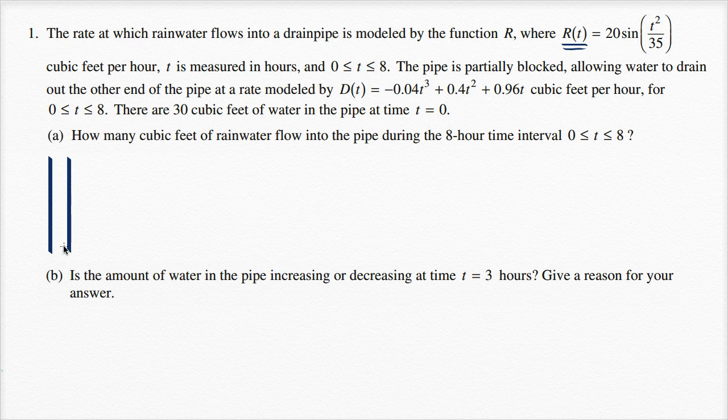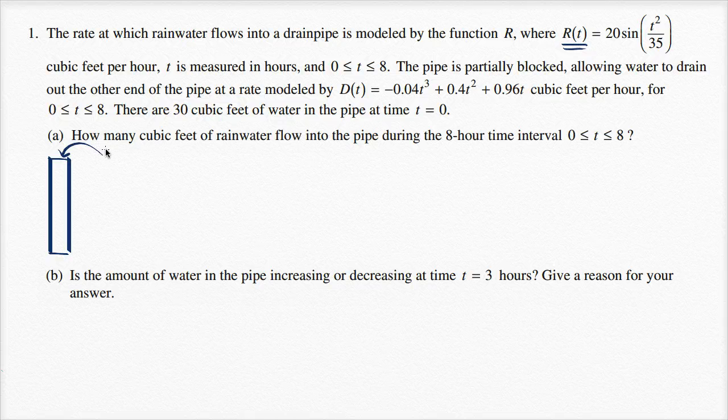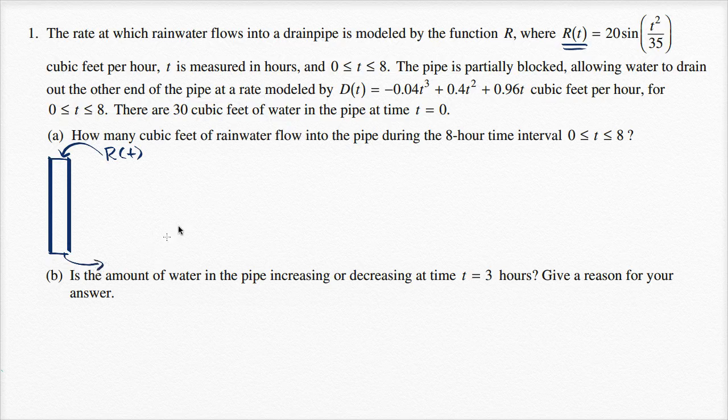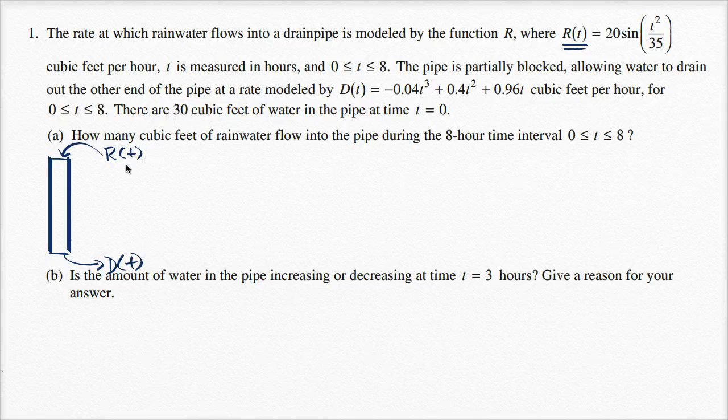Things are flowing in at a rate of R(t), and things are flowing out at a rate of D(t). And they even tell us that there's 30 cubic feet of water right in the beginning. But these are the rates of entering and the rates of exiting.